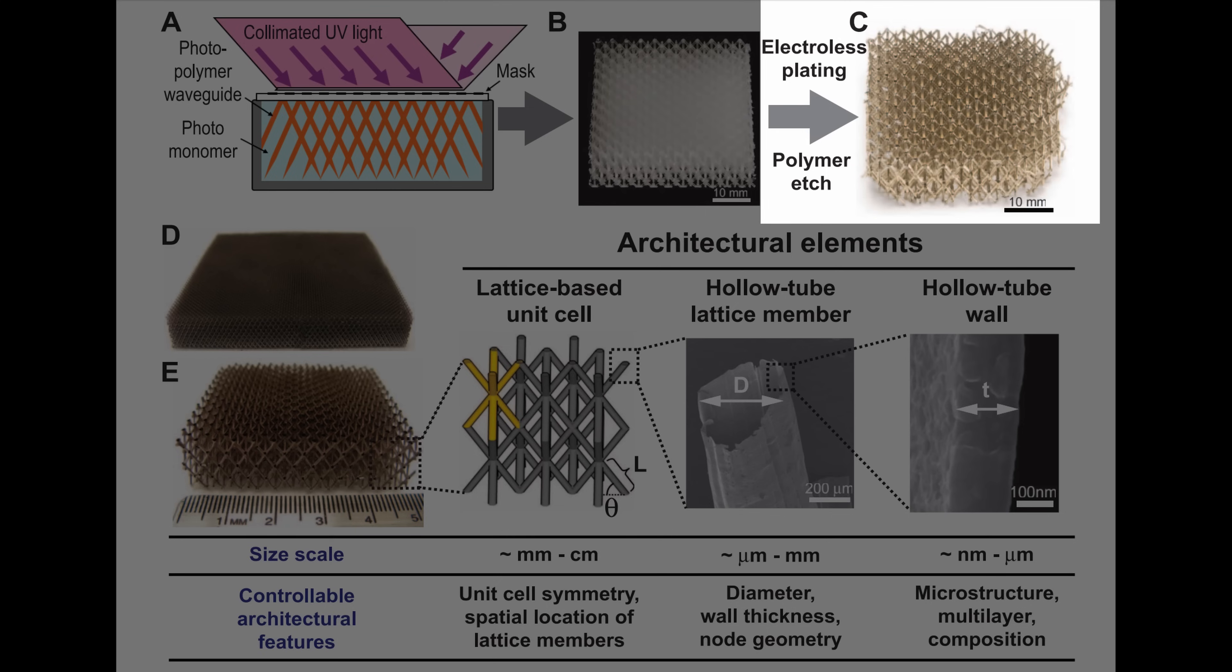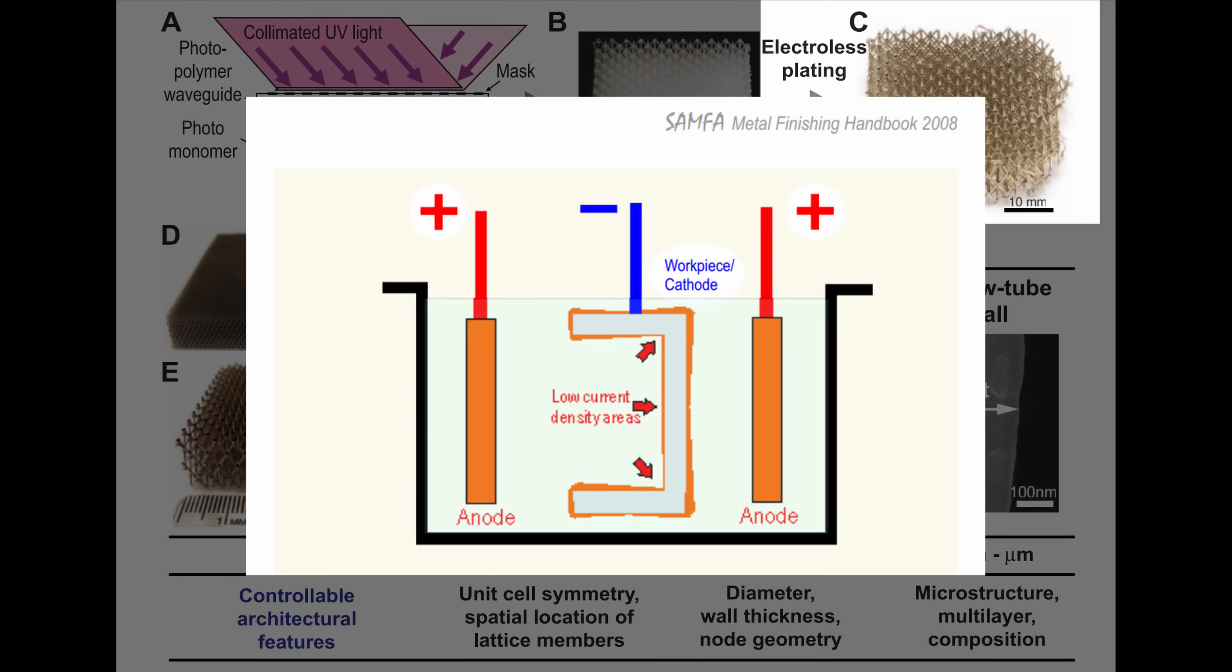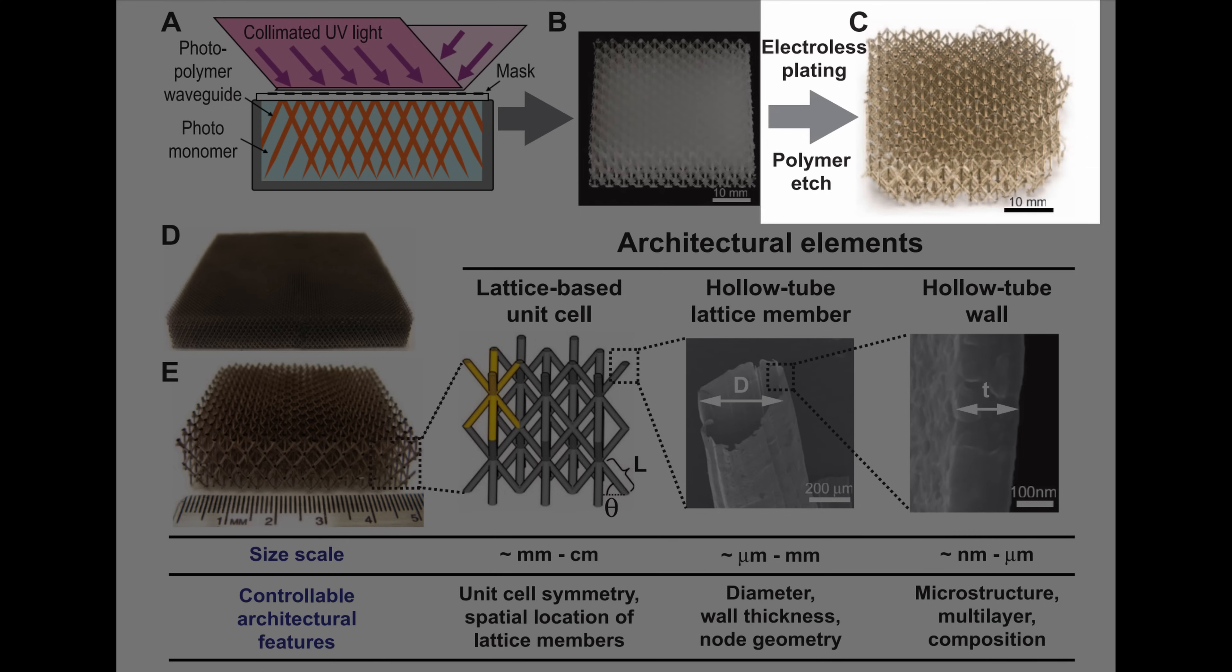The electroless process is pretty nice for two main reasons. One, as I mentioned, it covers all surfaces that are available to the solution in a pretty even coating, which is not something that you can get easily from electroplating, which is much more dependent on the current density at any particular location. So that's a huge advantage, getting a nice even coverage. The second advantage is that you can easily coat non-conductive materials like plastic.